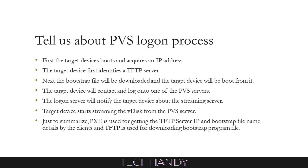Tell us about the PVS logon process. First, the target device is booted and acquires an IP address. The target device first identifies a TFTP server. Next, the bootstrap file will be downloaded and the target device will be booted from it. The target device will contact and log on to one of the PVS servers. The logon server will notify the target device about the streaming server. The target device starts streaming the v-disk from the PVS server. PXE is used for getting the TFTP server IP and bootstrap file name details, and TFTP is used for downloading the bootstrap program file.